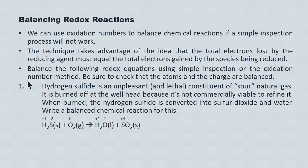Here I've assigned oxidation numbers to everything. Hydrogen is plus one generally. The sulfur in H₂S is minus two to balance with the two hydrogens. Oxygen is in its atomic state — it's bound up in a diatomic molecule but it's still a neutral atom with an oxidation state of zero. On the product side, hydrogen is plus one, oxygen is minus two, and there are two oxygens. So the sulfur in SO₂ must be plus four to cancel out the oxygen and give a zero net oxidation number for the molecule.